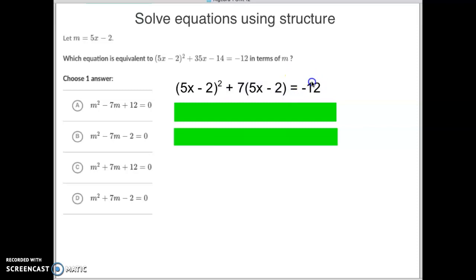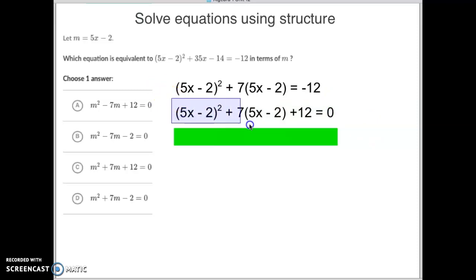So we've put this in terms of the 5x minus 2. The only thing is when we deal with quadratics, we want this right side to equal 0. So let's make that our next step. Let's add 12 to both sides. So you're going to notice I do that in this step.